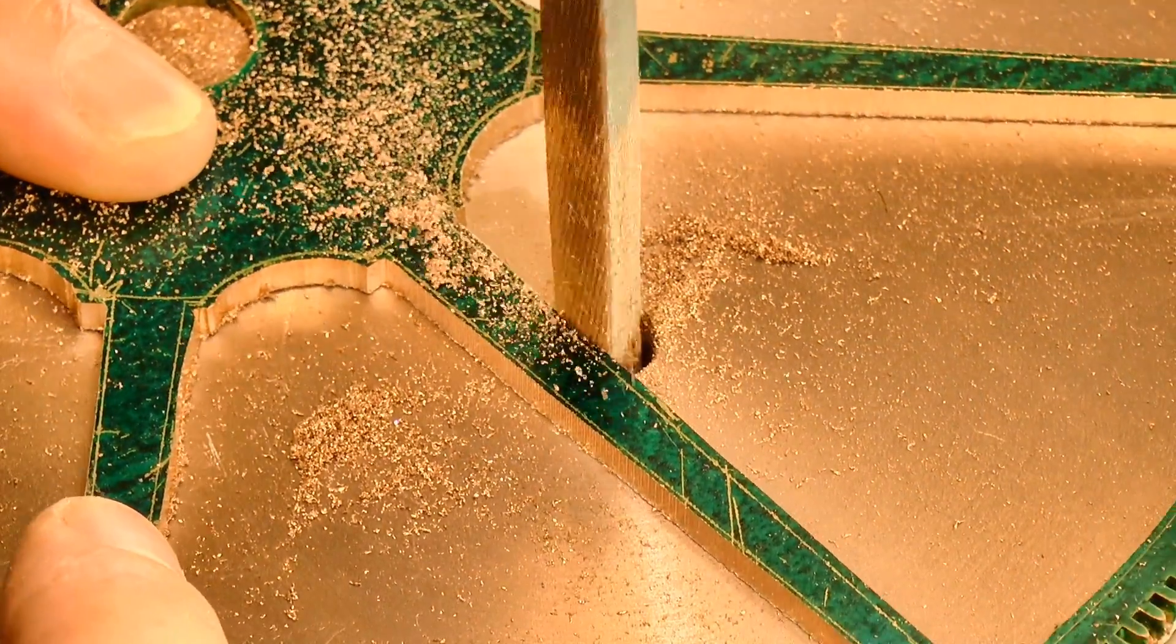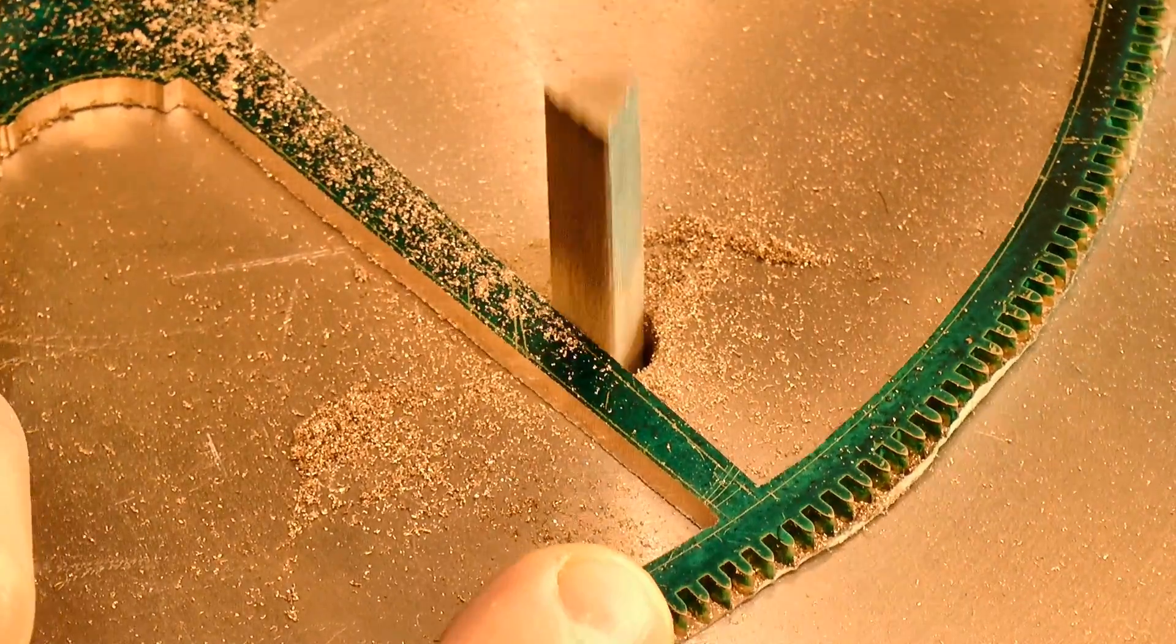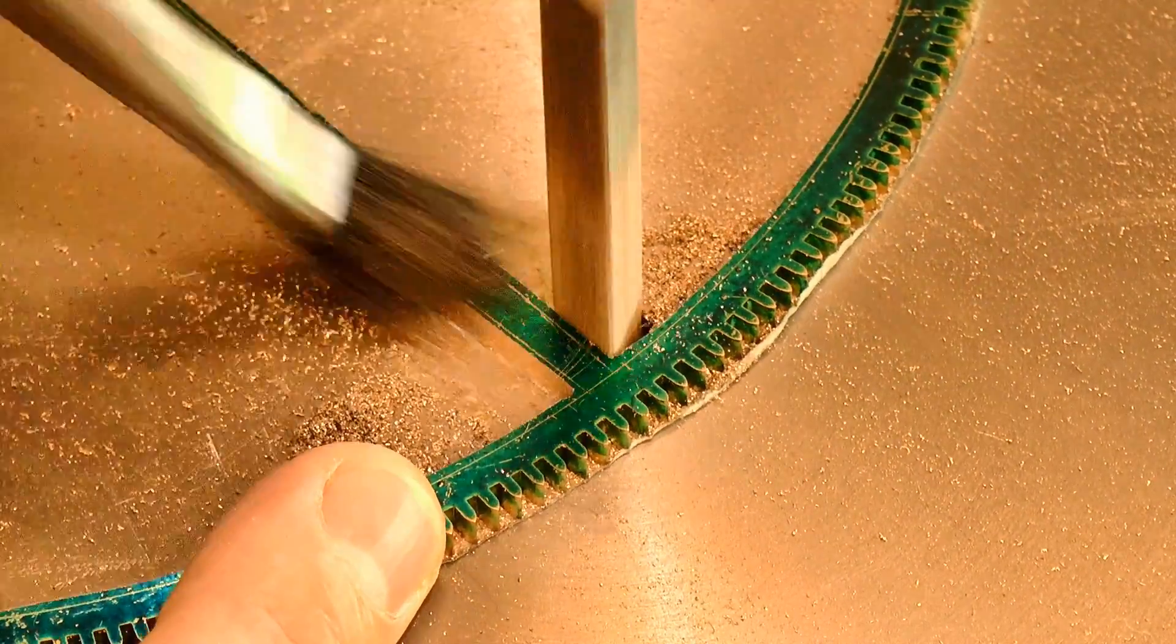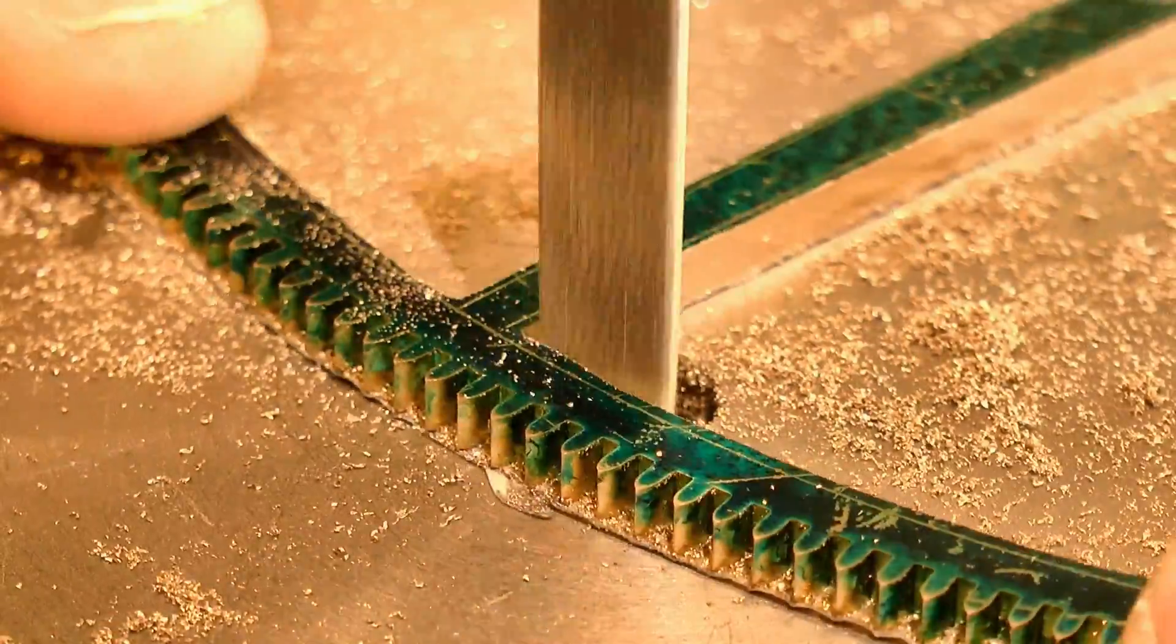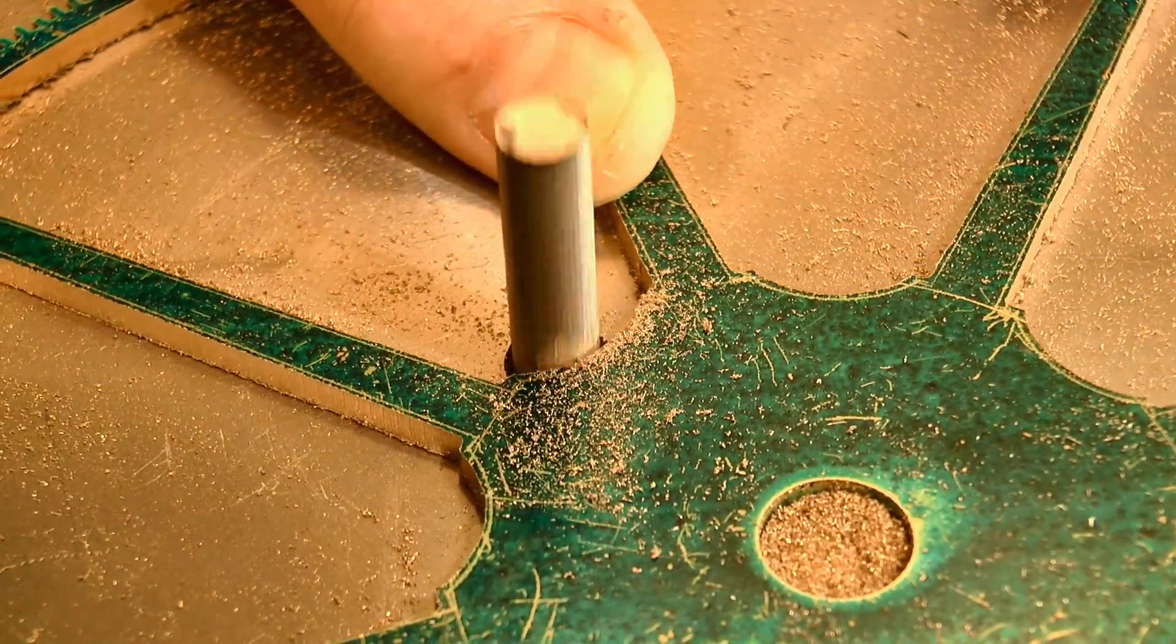You can see here the real value of this machine. Because of its vertical action, it makes it really easy to clear out and then square up all of the internal corners. And best of all, the cut is always perpendicular to the work.